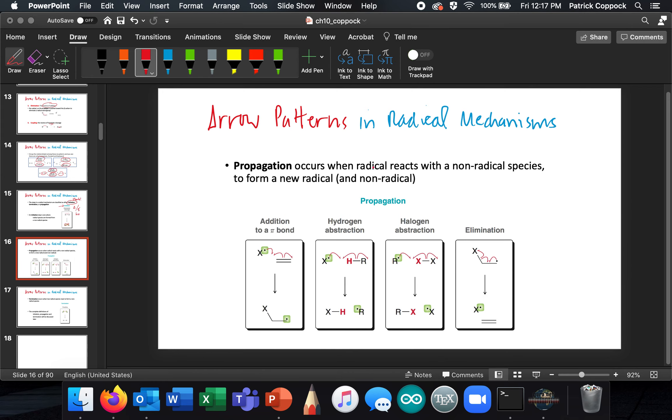Then we have propagation, where we get radicals from radicals. So here's a radical here, and here's a radical in the end. So propagation is where we get radicals from radicals.